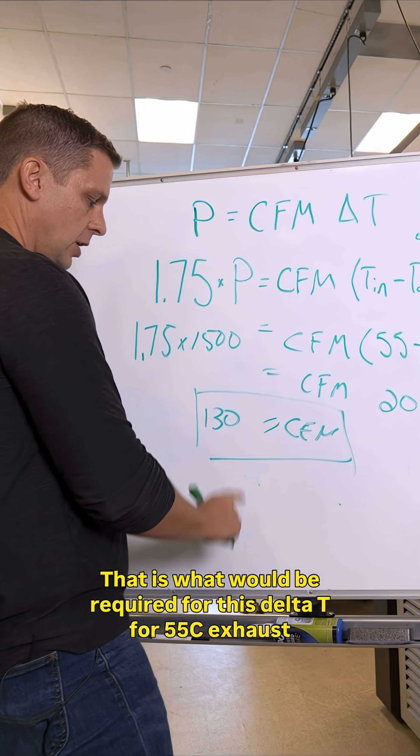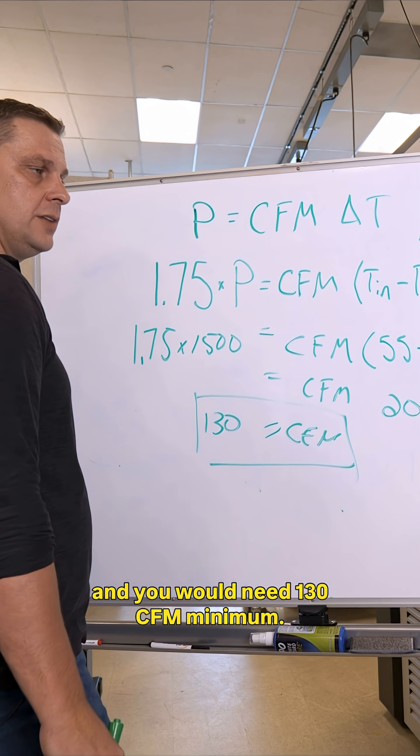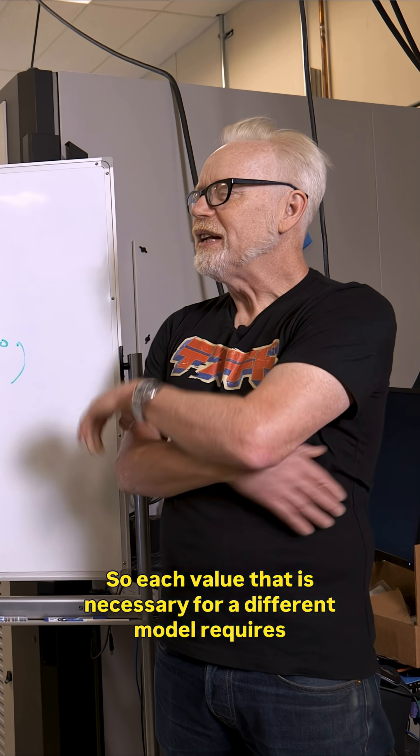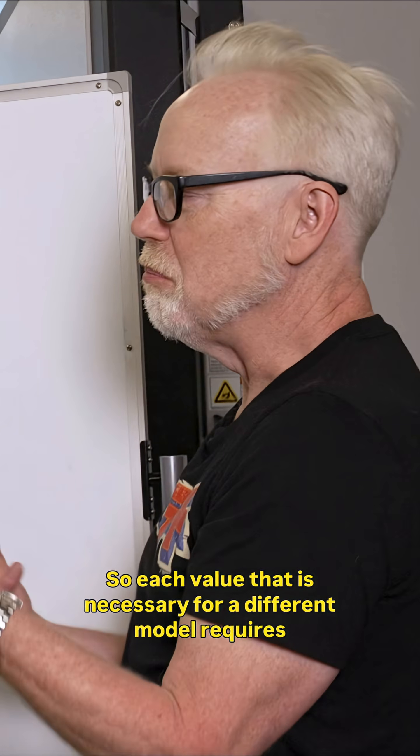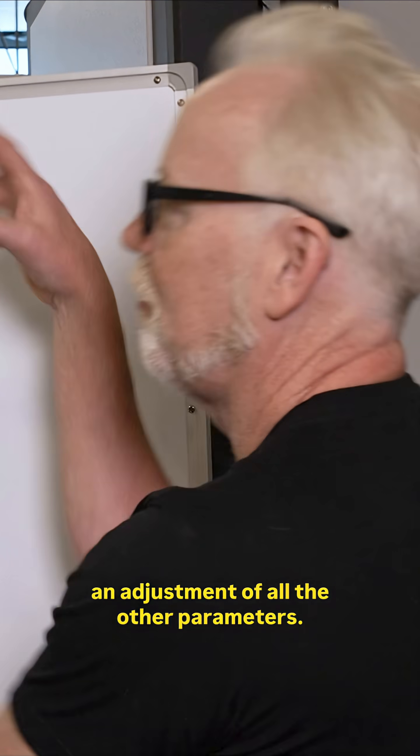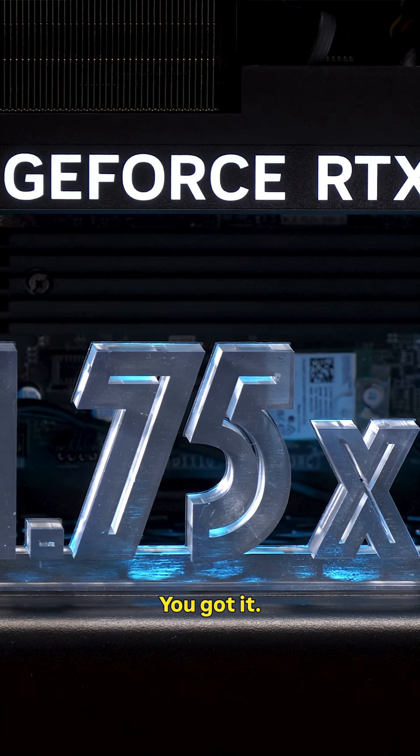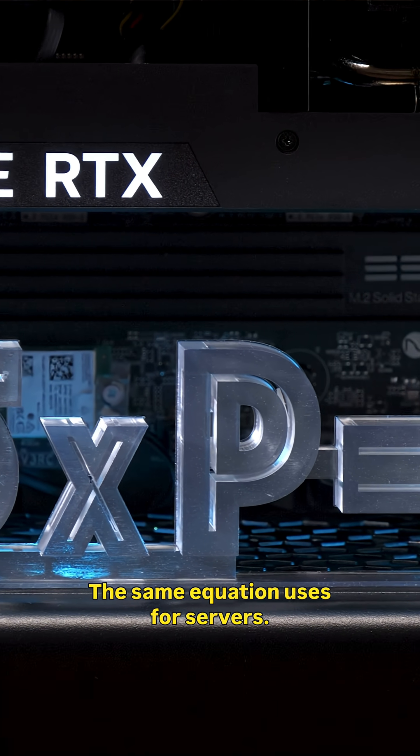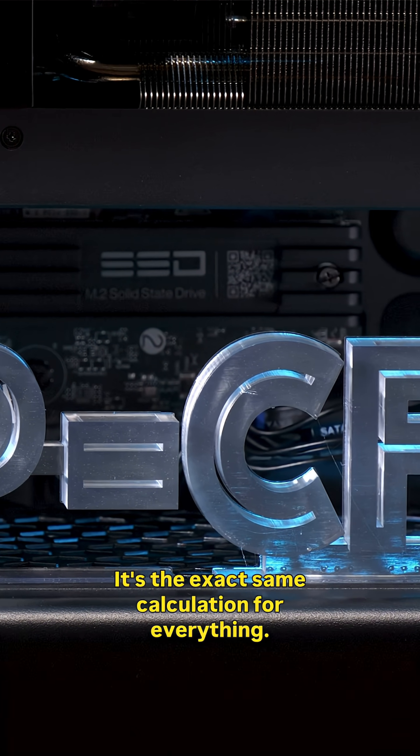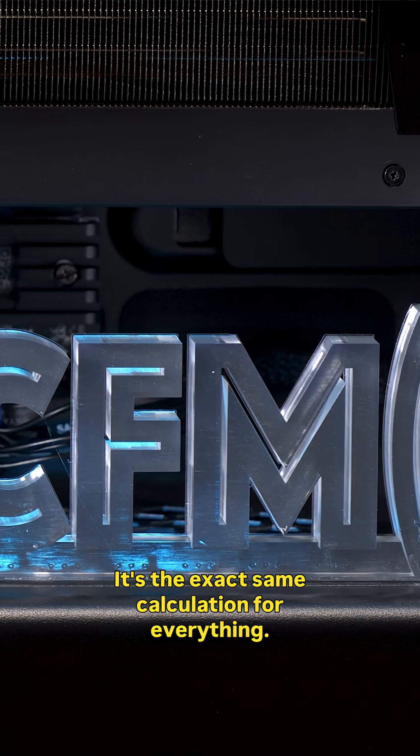That's so simple. Each value that is necessary for a different model requires an adjustment of all the other parameters. The same equation is used for servers, power plants—it's the exact same calculation for everything. It relates power to airflow.